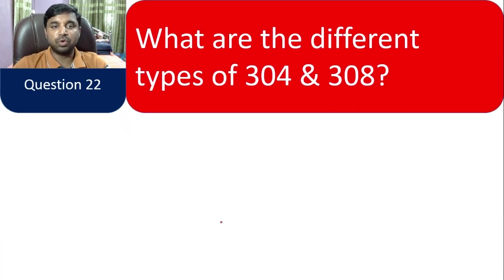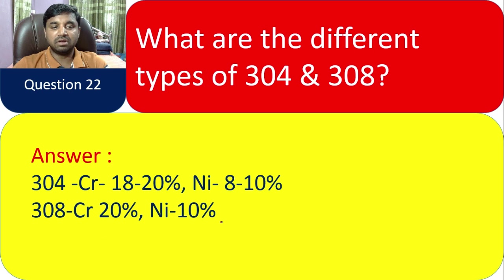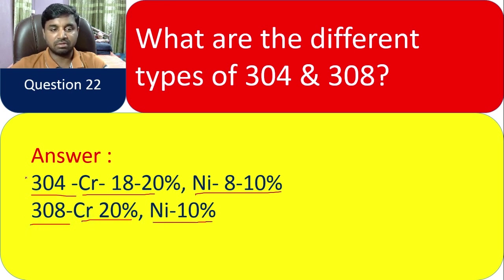Question 22: What is the difference between 304 and 308 stainless steel? 304 has chromium 18–20% and nickel 8–10%, whereas 308 has chromium 20% and nickel 10%. That is the only difference.